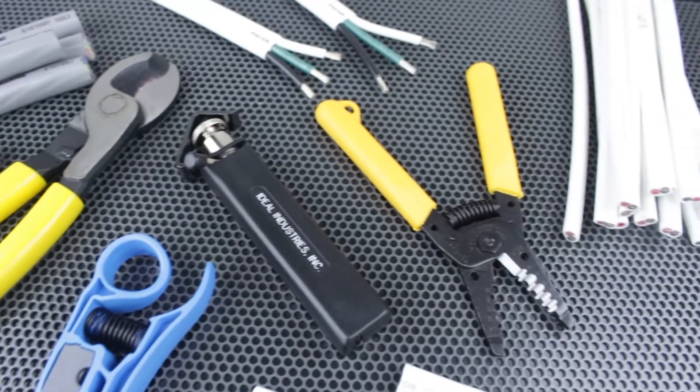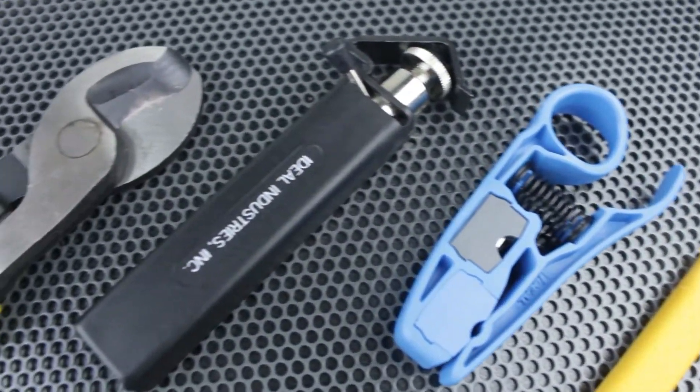Properly stripping round boat cable is easier than you may think. For this task, we're going to need three types of tools.